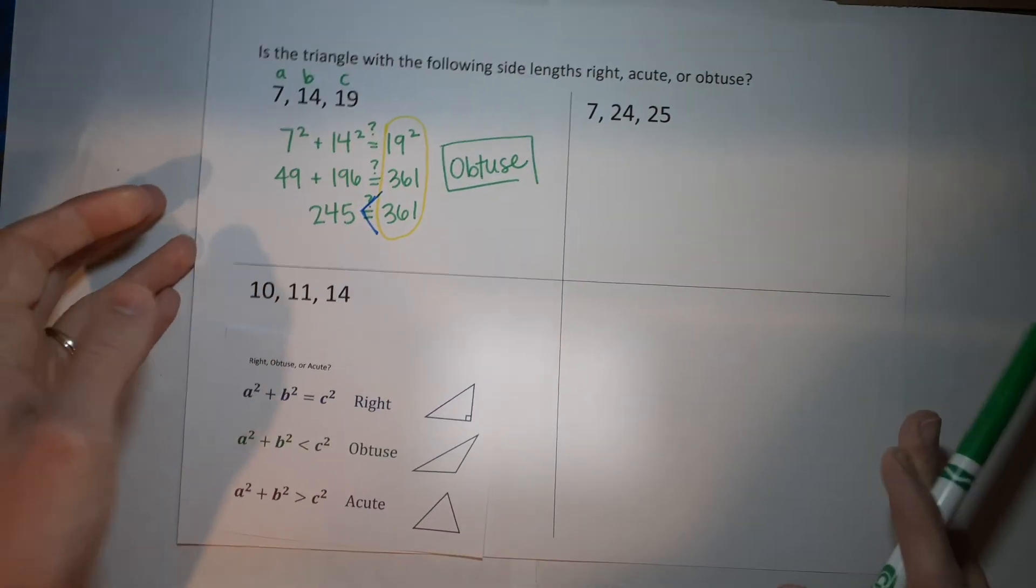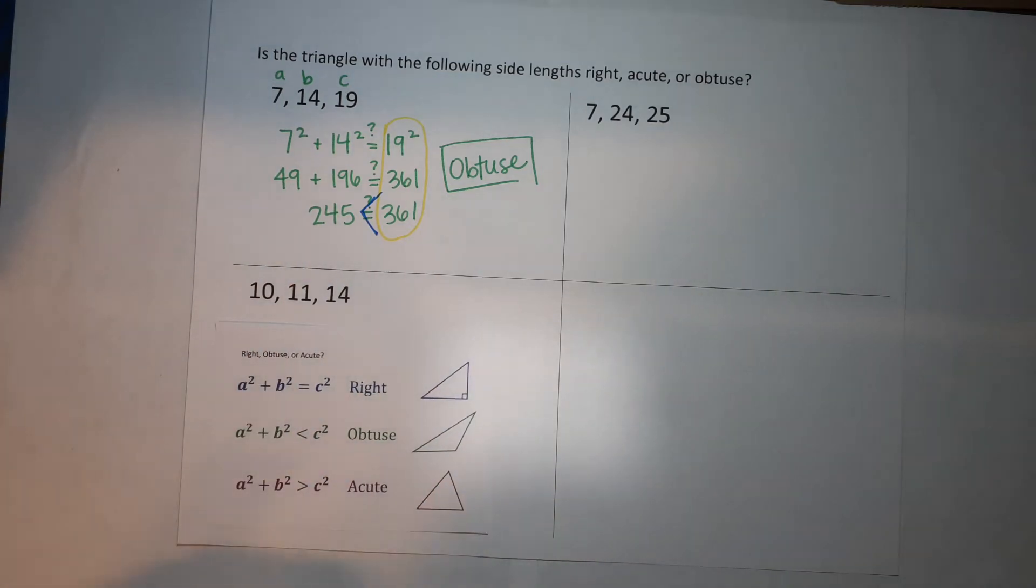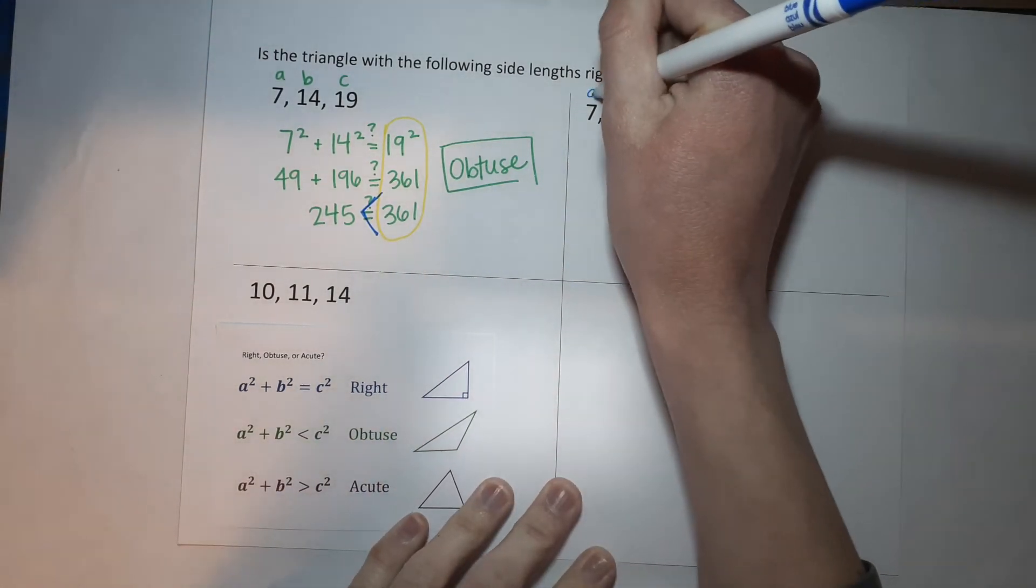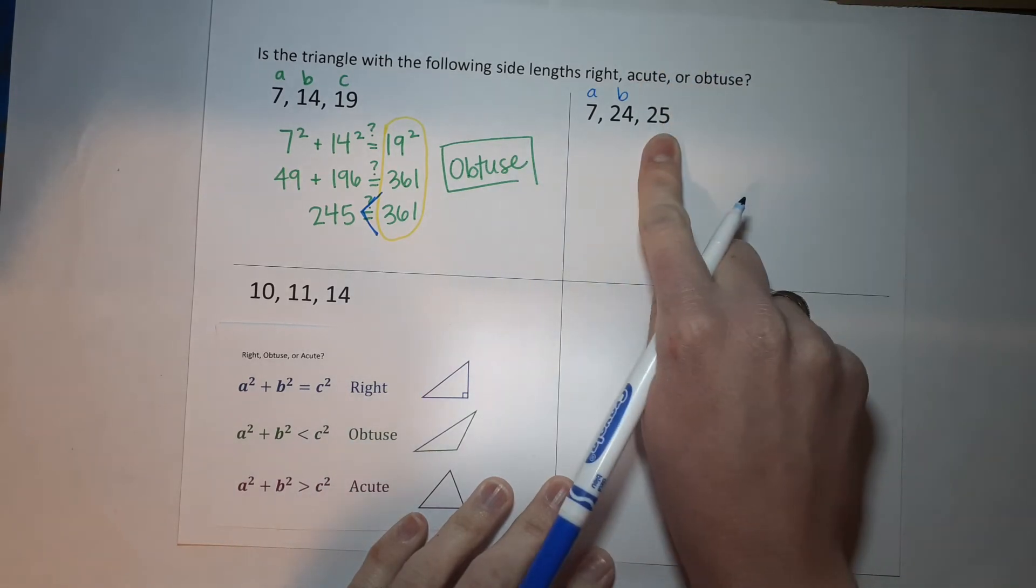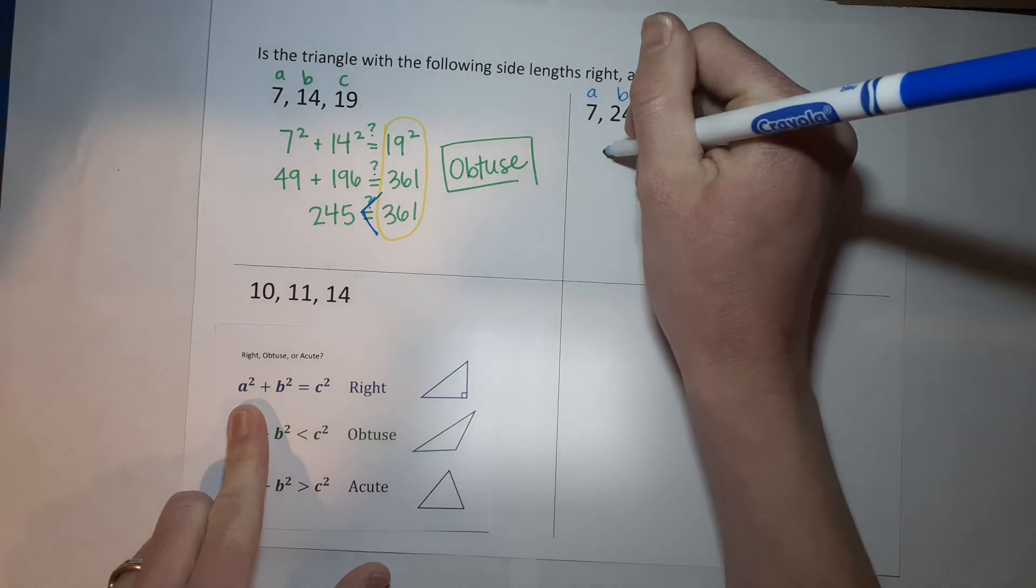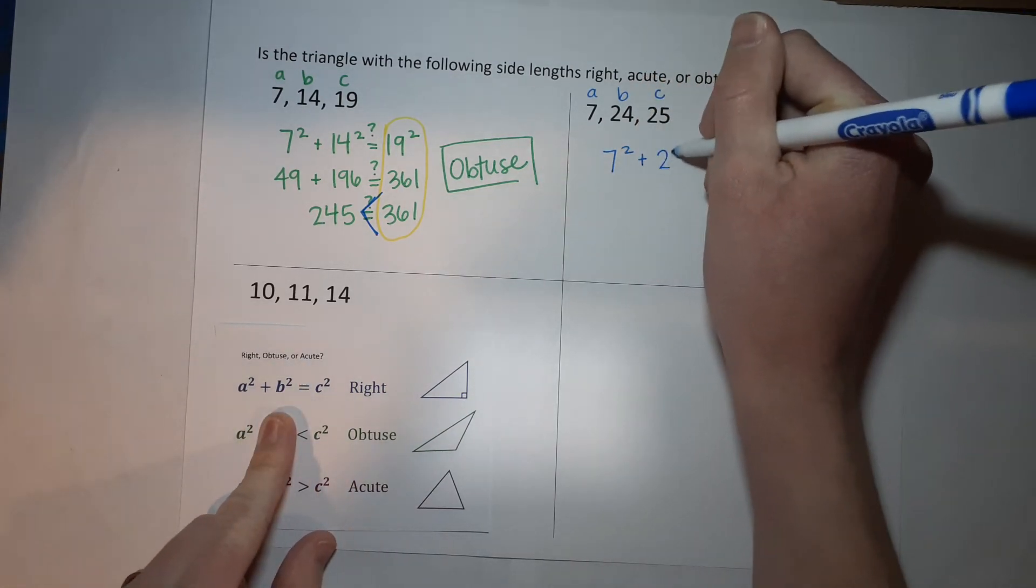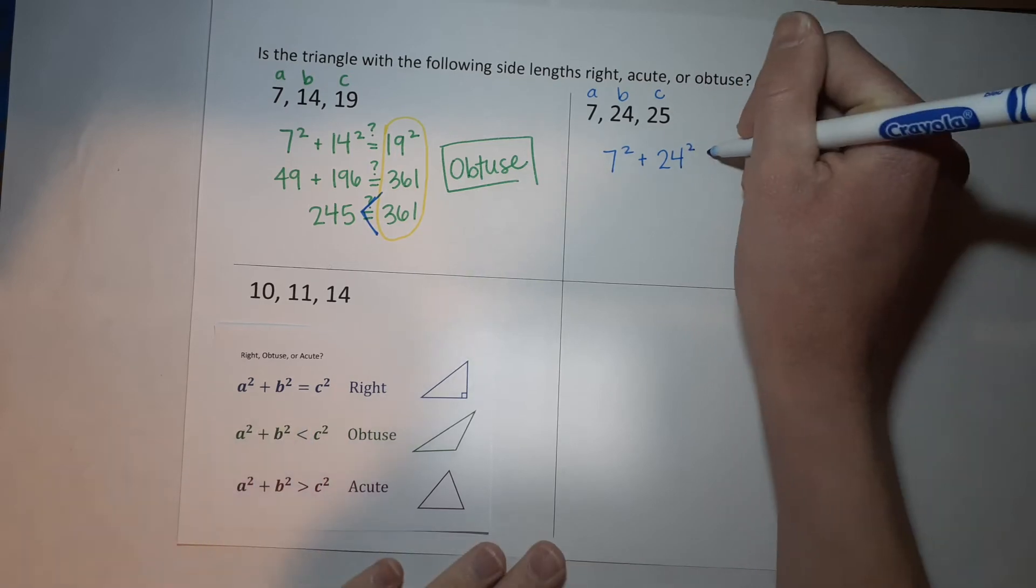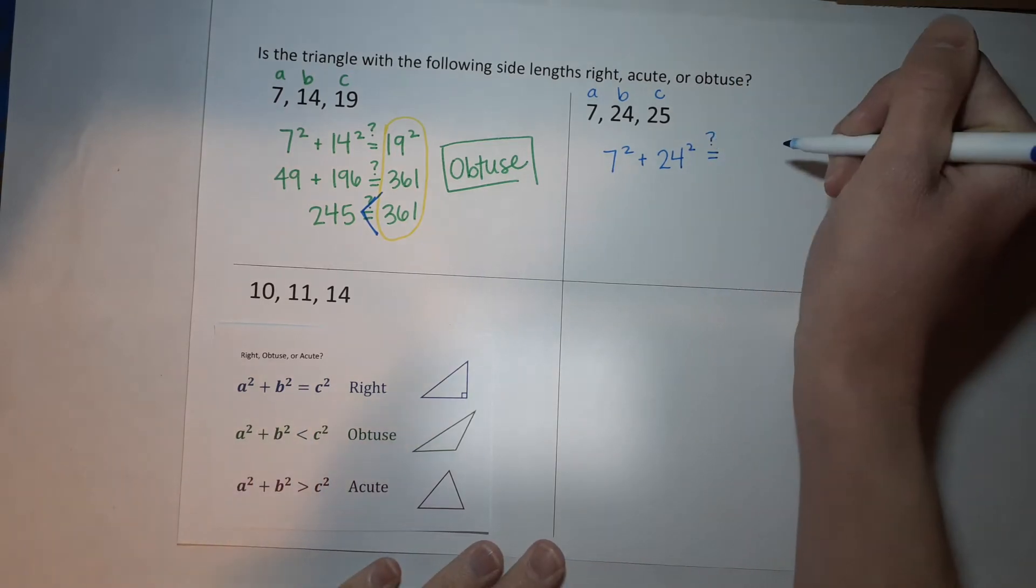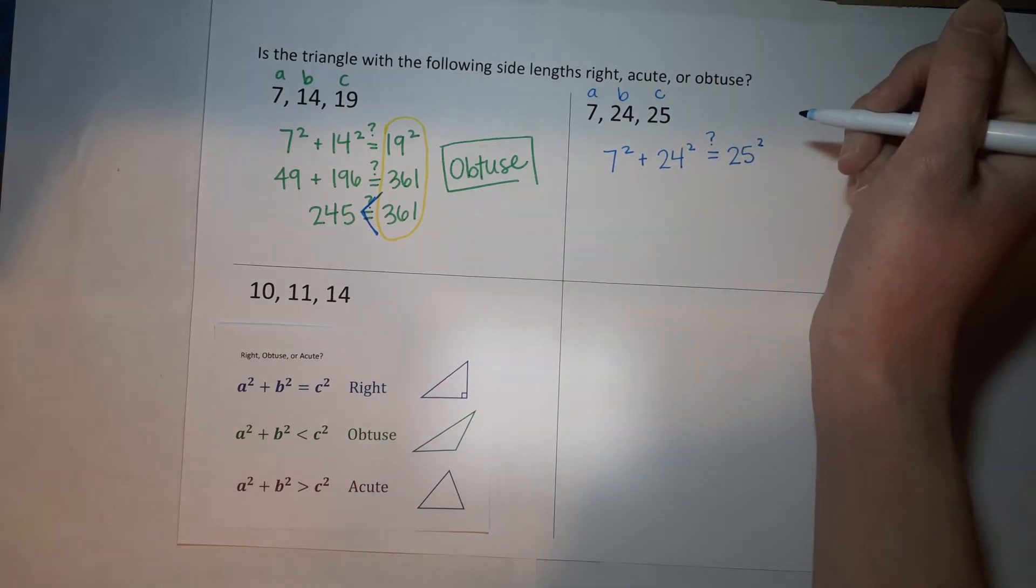We've got a triangle with sides 7, 24, and 25. Let's see. So we are going to set it up in the Pythagorean theorem and see what happens. So a, b, my c is 25 because it's the biggest. So a squared is 7 squared plus b squared is 24 squared. We're seeing if that is equal to 25 squared. So I'm just sticking a little question mark over the equal sign.